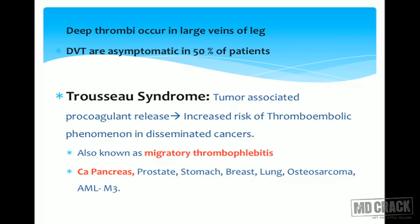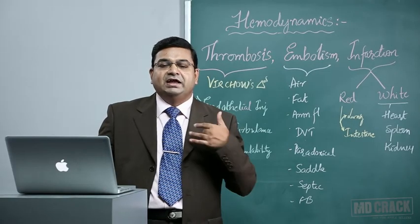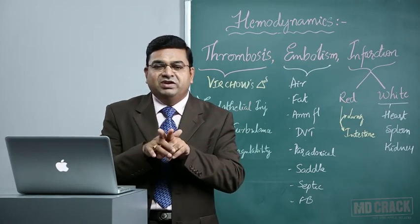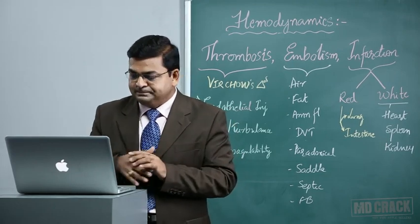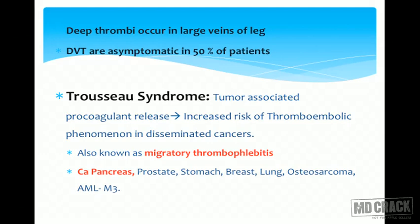Fifty percent of deep venous thromboses remain asymptomatic, but suddenly a dislodged embolus can become a saddle embolus, obstructing the main bifurcation of the pulmonary vessels and causing sudden death. Trousseau's syndrome is due to tumor-associated procoagulant release, very commonly seen with carcinoma of the pancreas or mucin-secreting adenocarcinomas of stomach, breast, prostate, lung, and osteosarcomas, resulting in increased thromboembolic phenomena. This is also called migratory thrombophlebitis. AML M3, acute promyelocytic leukemia, is notably associated with DIC.